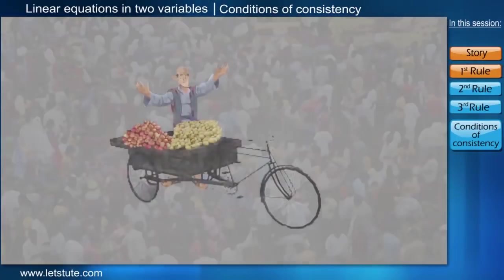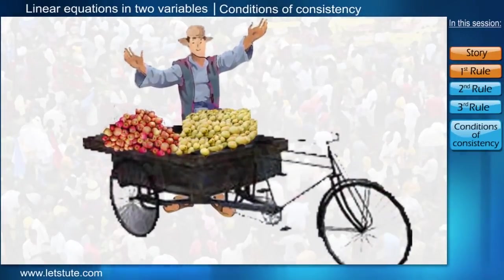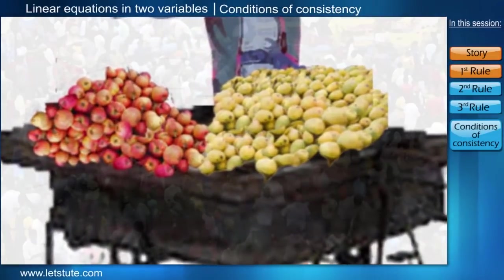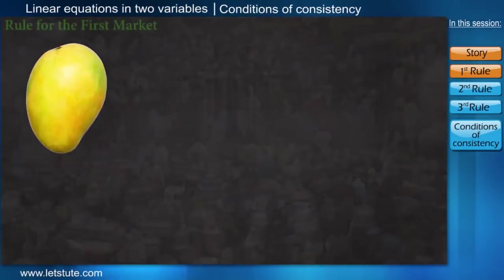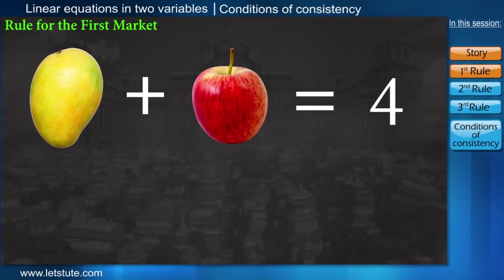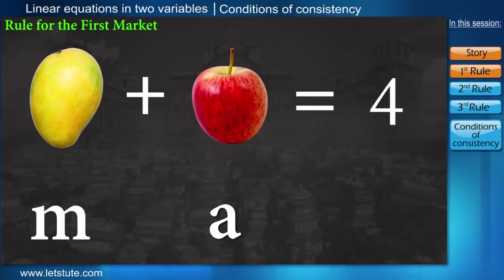For the first market, the condition was, a person willing to sell his products in this market can set any price for the individual fruits, such that the price of one mango and one apple should total up to four rupees. That means if m is the price of a mango and a is the price of an apple, then m plus a should be equal to four.